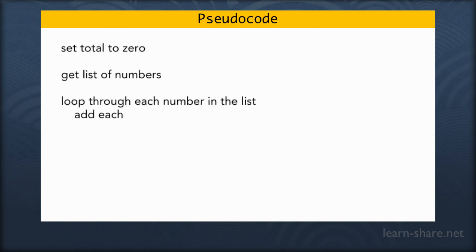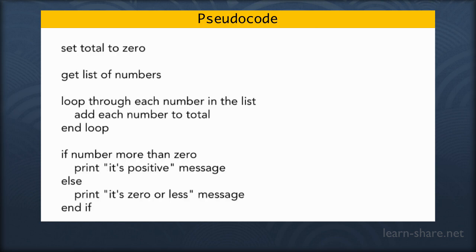Here's an example of going through a list of numbers and adding them together. In pseudocode, the whole point is to get away from braces, parentheses, brackets, off-by-one errors, and naming conventions — it's whatever seems natural.